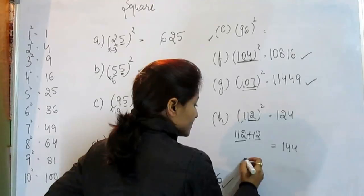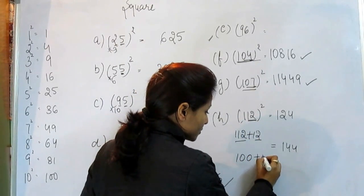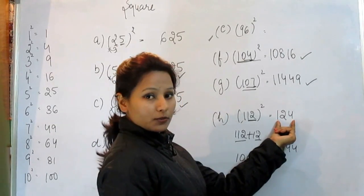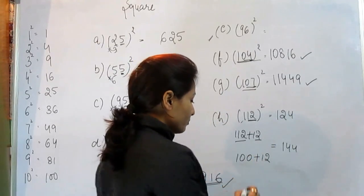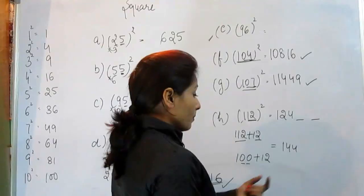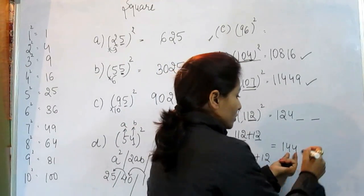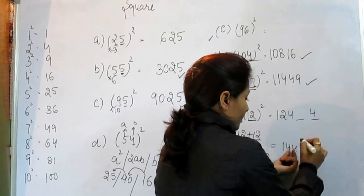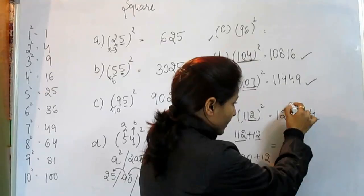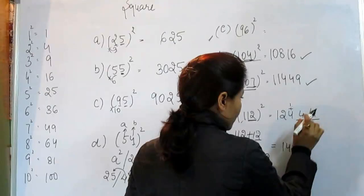But 112 is what? That is 100 plus 12. It means after these 3 numbers, after these 3 digits, we can put only 2 numbers here. But this number contains 3 digits. So what do we do? We put this number here and this number here, and this one we will add in this 4.